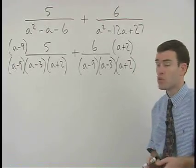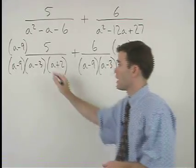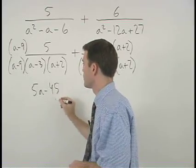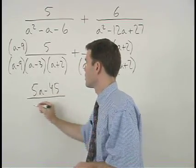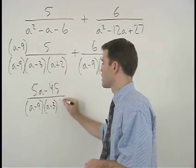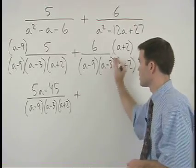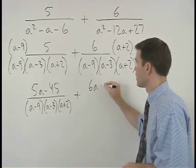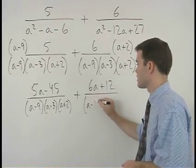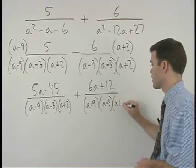And remember to distribute in the numerators. So we have (5a minus 45) over (a minus 9)(a minus 3)(a plus 2) plus (6a plus 12) over (a minus 9)(a minus 3)(a plus 2).